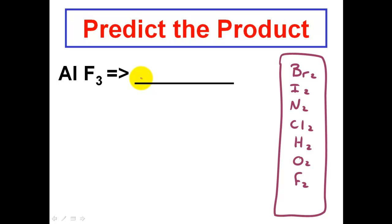What we have in this case is predicting the product, and I'm going to ask you to actually tell me what's going to be on the product side. You're going to predict what is produced. Look at the reaction and say what exactly is going on. First, let's classify this — this is a decomposition reaction. The compound initially is going to break apart into the elements that make it up.